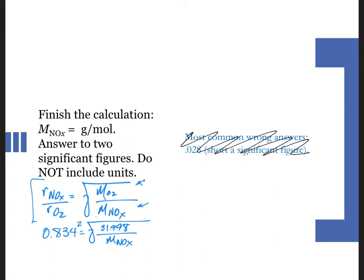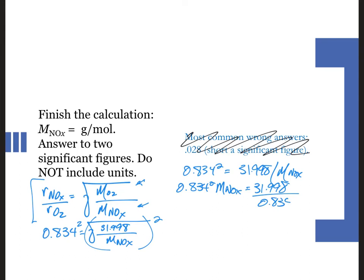To solve this, we're going to square both sides. We get 0.834 squared equals 31.998 divided by the molar mass of NOx. So multiply both sides by molar mass NOx. We get 0.834 squared times molar mass NOx is 31.998. Divide both sides by 0.834 squared.